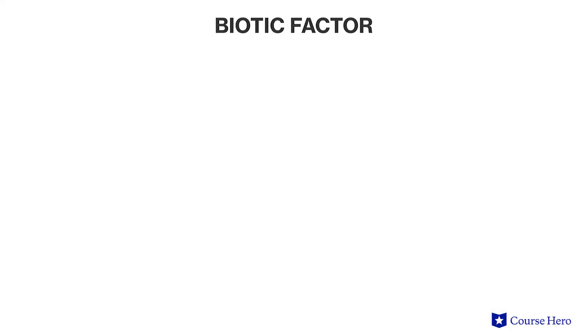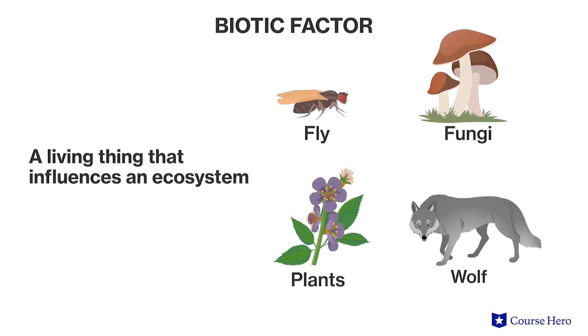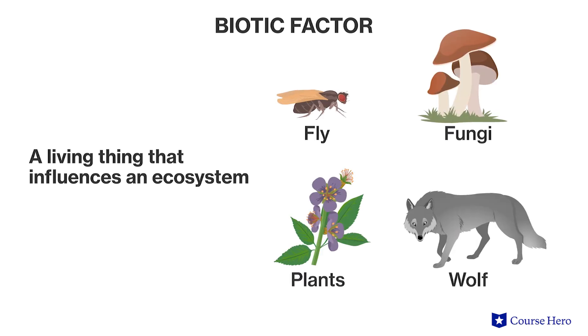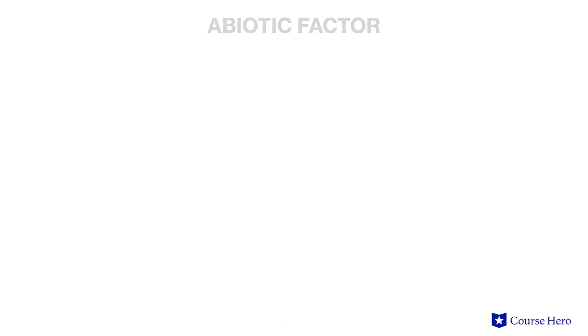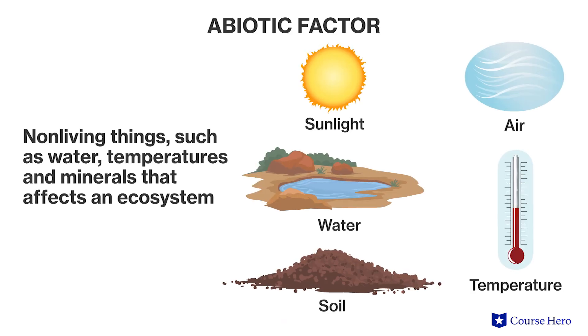The distribution of organisms around the planet is mainly dependent upon biotic and abiotic factors. A biotic factor is a living thing that influences an ecosystem, such as food resources, predators, and pathogens. An abiotic factor is a non-living thing, such as water, temperature, and minerals, that affects an ecosystem.